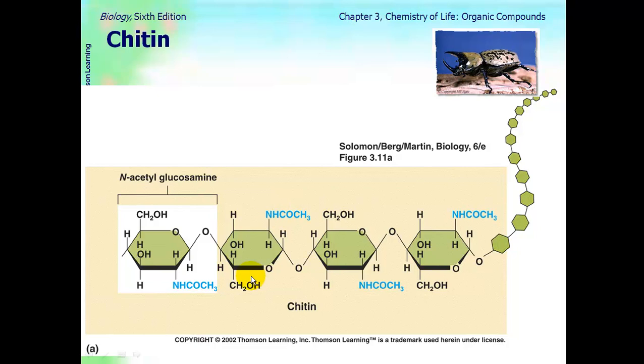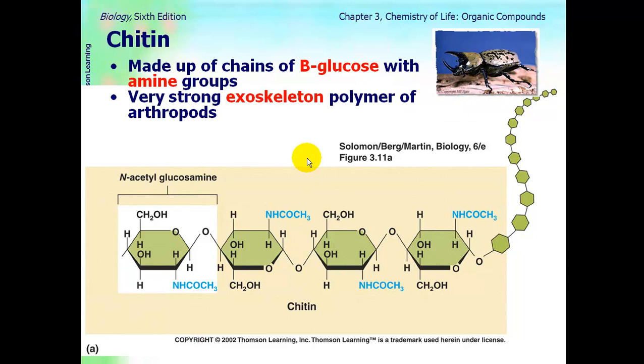And the last one is chitin. Chitin is completely different. It completely stands out compared to the other ones. As you can see, it is beta-glucose. But there is a amino group attached to it. See the nitrogen? Amino or amine means there is a nitrogen group. And so that is what makes it chitin. It is a very strong exoskeleton polymer of arthropods. It is what makes up their shell. Most animals cannot digest it. And otherwise, it is linear, as you can see in the picture. And that completes our podcast for the first section of Chapter 3 for AP Biology.